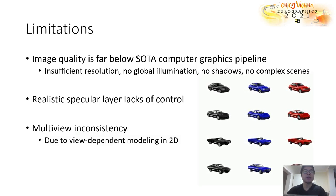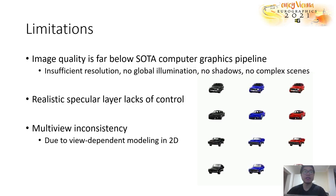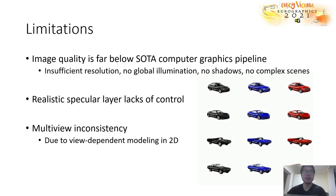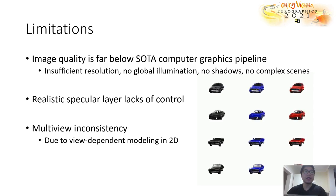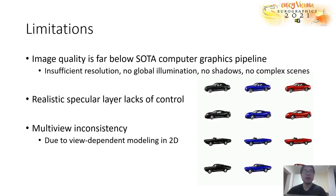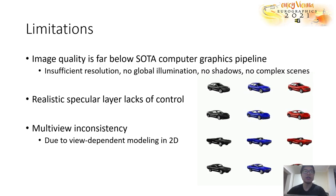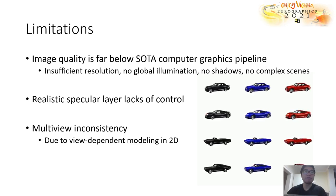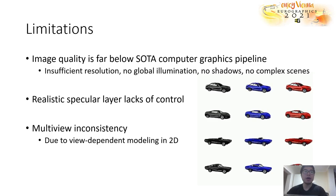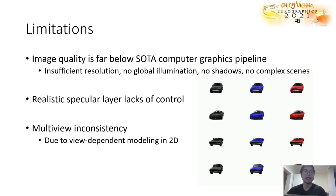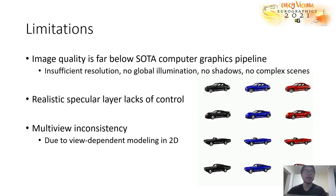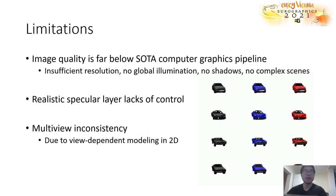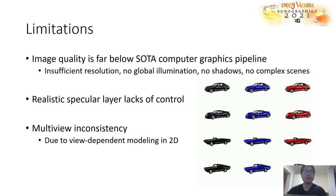As a first attempt towards a neural graphics pipeline for controllable image generation, there are still some limitations in our method in its current form. First, the image quality is far below state-of-the-art methods in computer graphics, due to insufficient resolution, no global illumination and shadows. The realistic specular map, while providing further realism, lacks control since it is view-dependently modeled. And it is obvious that our method has no multi-view consistency, due to view-dependent modeling in the 2D domain.